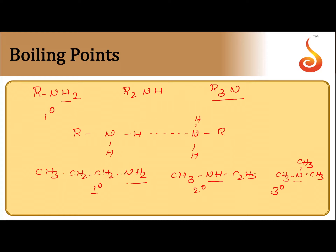The electronegativity of nitrogen is 3, whereas the electronegativity of oxygen is 3.5. So alcohols and carboxylic acids form stronger hydrogen bonds compared to amines. Amines are not associated to the same extent as alcohols or carboxylic acids, so they boil at lower temperatures. The boiling points of amines are lower than those of alcohols and carboxylic acids of comparable molecular mass. Amines boil at higher temperatures than hydrocarbons due to hydrogen bonding, but among isomeric amines, primary boils highest, then secondary, then tertiary.